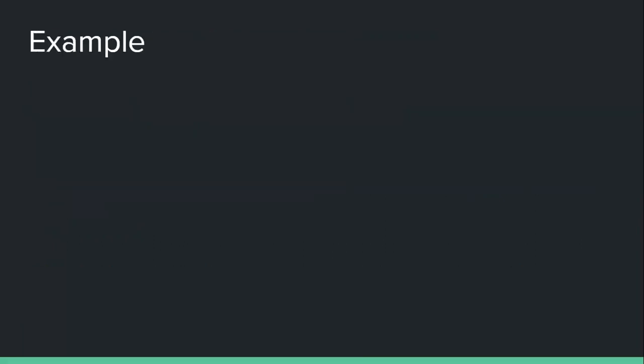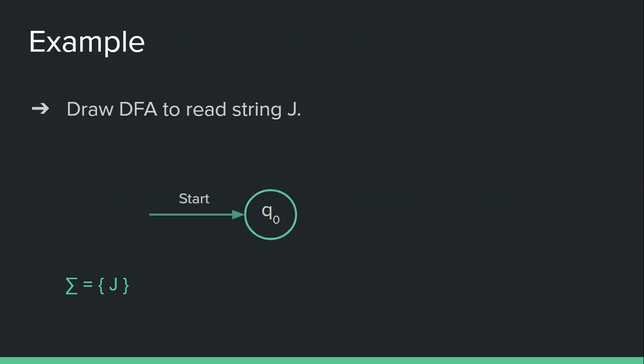Now let's see the smallest example of DFA. Draw a DFA to read string 'j'. Since no alphabet set is given, we'll consider an alphabet set containing only the symbol 'j'. Let's start with the initial state q0. From q0 we'll read our string 'j' and reach the new state q1. When we reach q1 we have read input symbol 'j', so we can accept the string here — we'll make q1 our final state. At q1 it has read string 'j' and accepted it. So in this DFA, q0 is the initial and non-final state, whereas q1 is the final state.